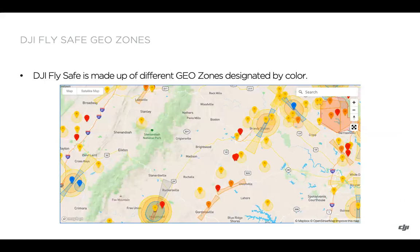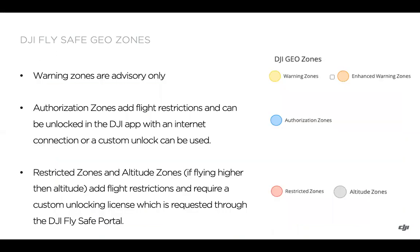As I mentioned, different types of GeoZones are designated by color, and you can see a variety of them on the map here. It isn't necessarily GeoZones everywhere, but we can see the different colors here: orange, yellow, blue, red, and grayish black.